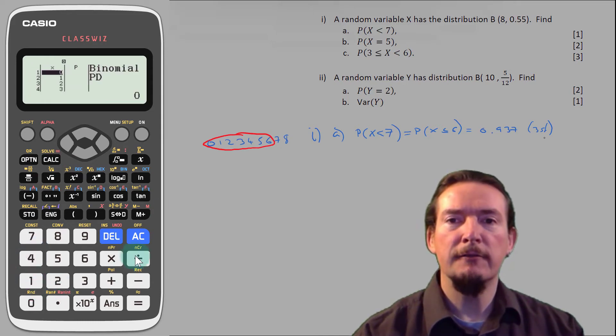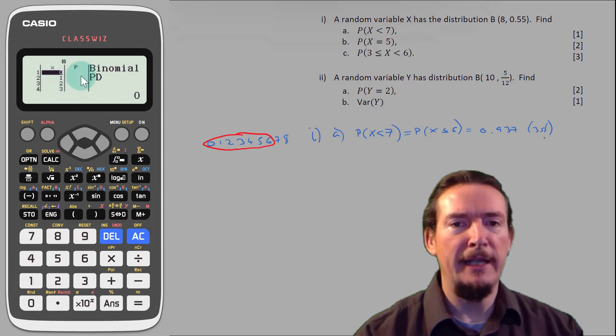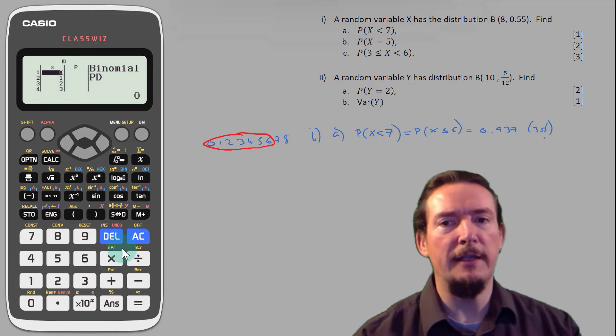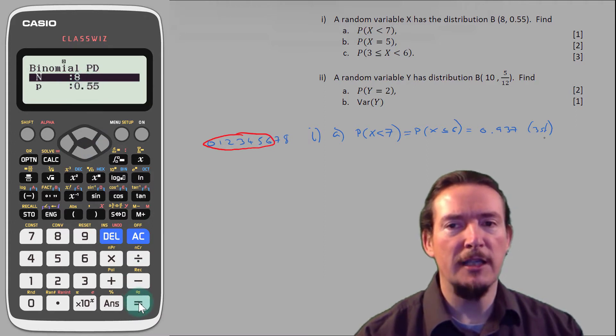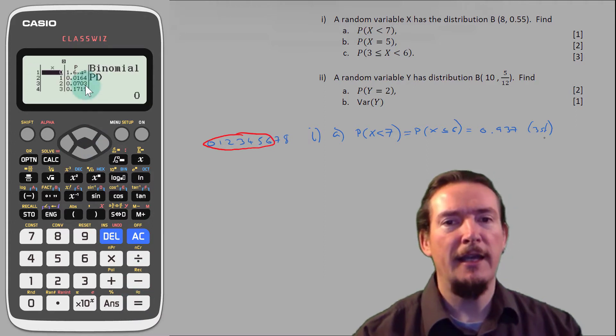Our values for x from 0 through 8 should still be here, but the probabilities have disappeared. Pressing equals, and you'll see that the values for n and p are still here from last time, so we just press equals again, and the probabilities will be populated into the table.